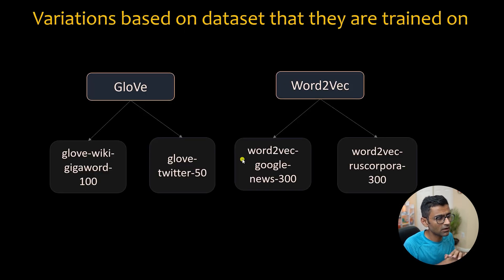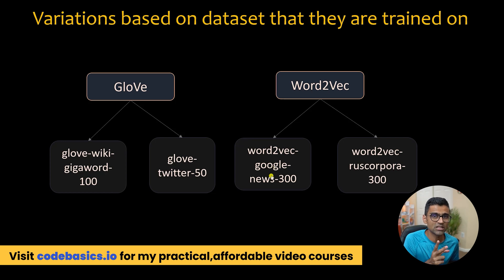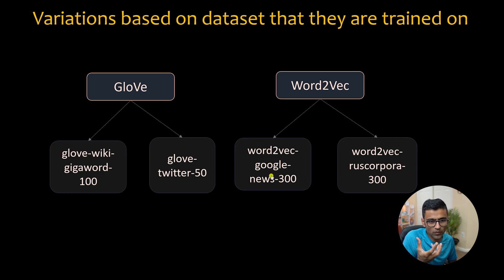Now there are variations based on the data set that they are trained on. For example, word2vec you can train on Google news data set or some different corpus and based on that you can get different variations. So word2vec is like a technique but you can use that technique on different data sets. It's like you are training support vector machine. Support vector machine is one technique but you can train it on Amazon reviews or movie classification. Similarly word2vec - the actual embedding vector you can get by training it in a different corpus. Same like GloVe.